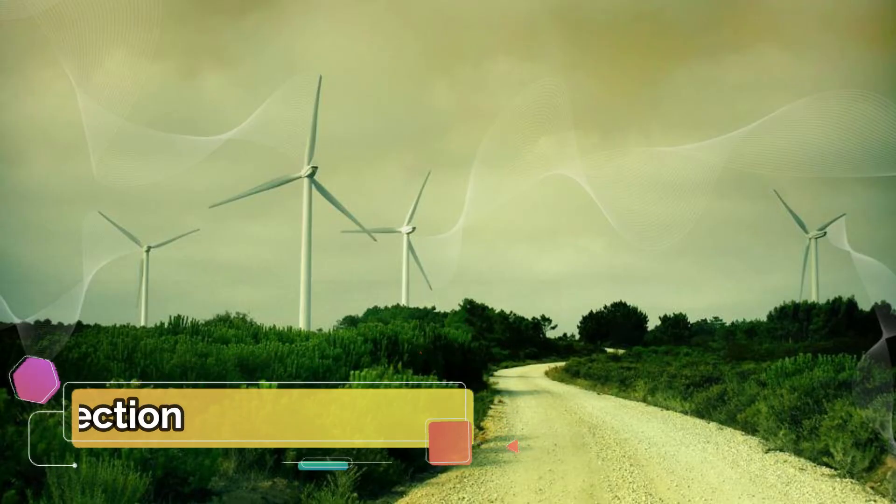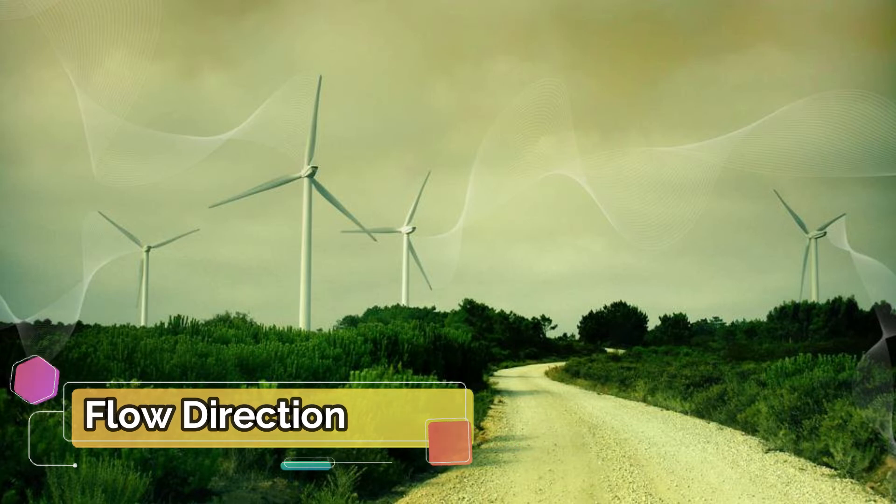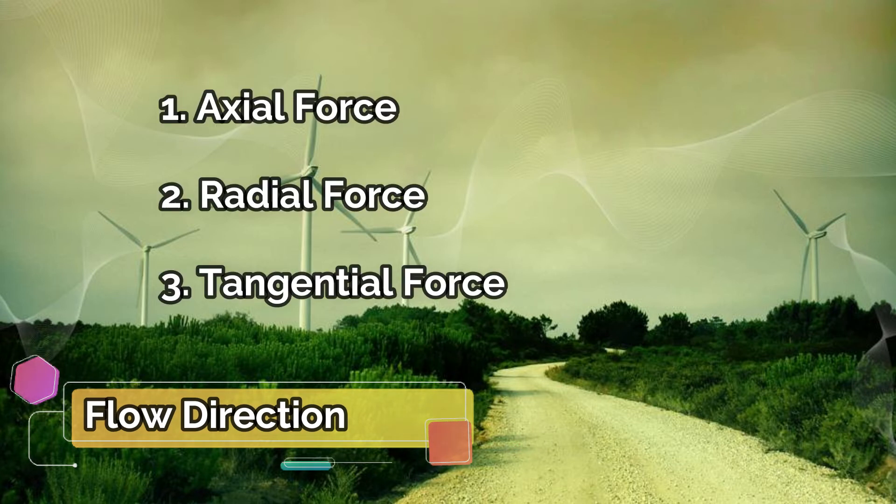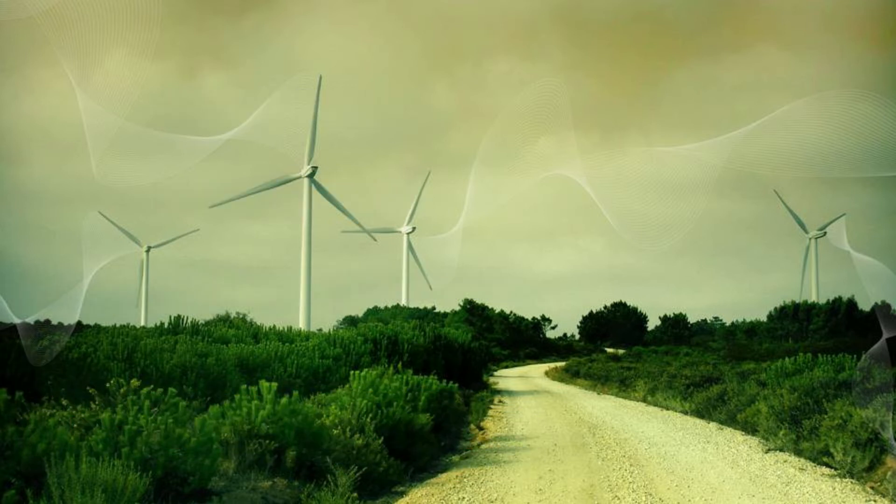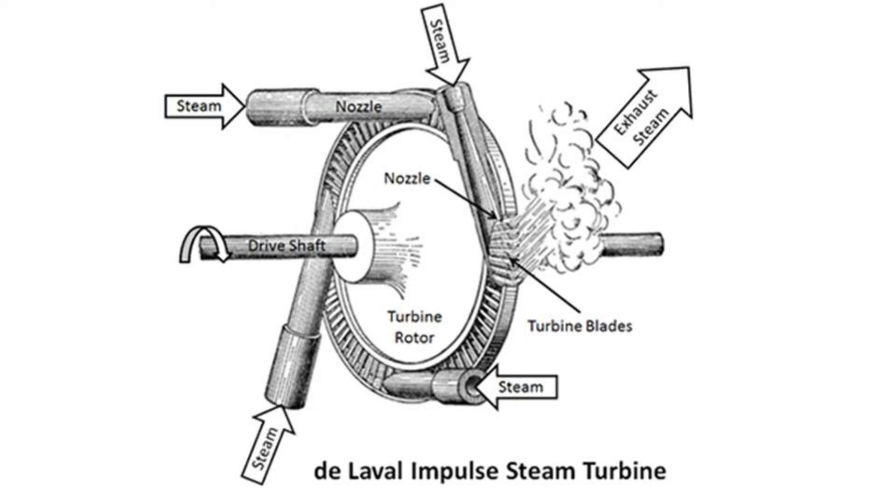Flow direction. The importance of flow direction is to calculate forces associated with the flow, like axial force, tangential force, radial force, etc. Because these forces drive the turbine wheel and hence the turbine rotates and produces power.